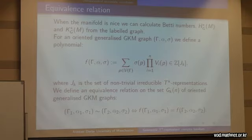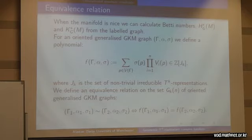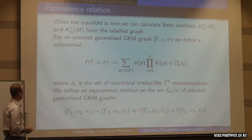Audience question: could you repeat what you said about a T3 action on S6 — what did you claim about there not being an equivariant almost complex structure? Speaker: I think that's true. OK, so we have an equivalence relation on the set of generalised GKM graphs.